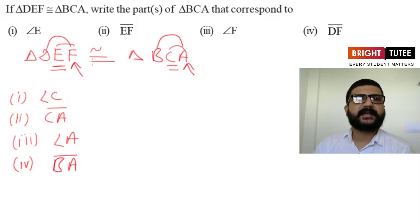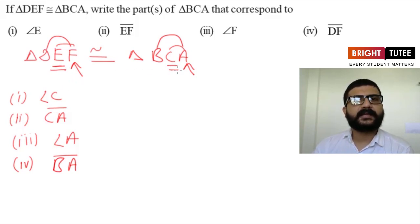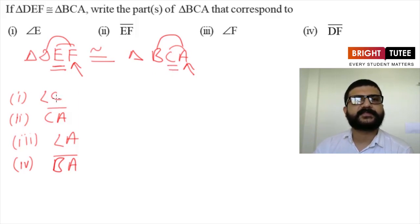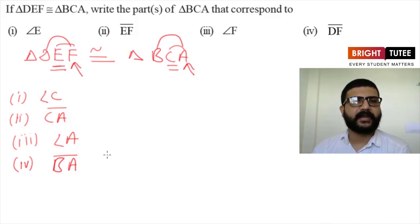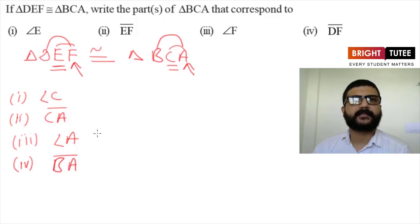Just by the naming of the triangles we can tell which part of one triangle corresponds to a part of the second triangle. Angle E corresponds to angle C of triangle BCA, side EF of triangle DEF corresponds to side CA of triangle BCA, angle F corresponds to angle A, and DF corresponds to BA. In upcoming videos we are going to learn about criteria to show whether two triangles are congruent.